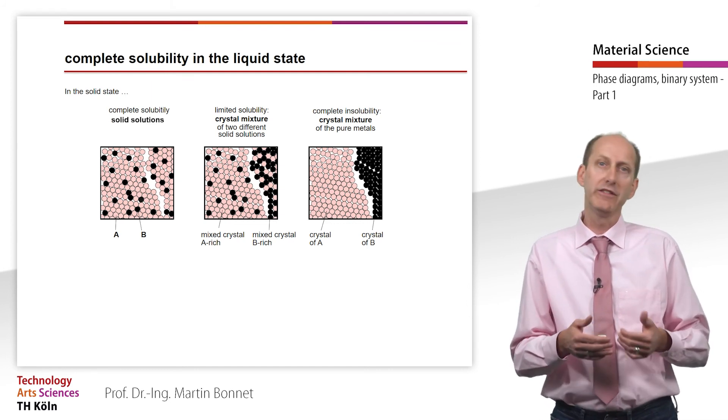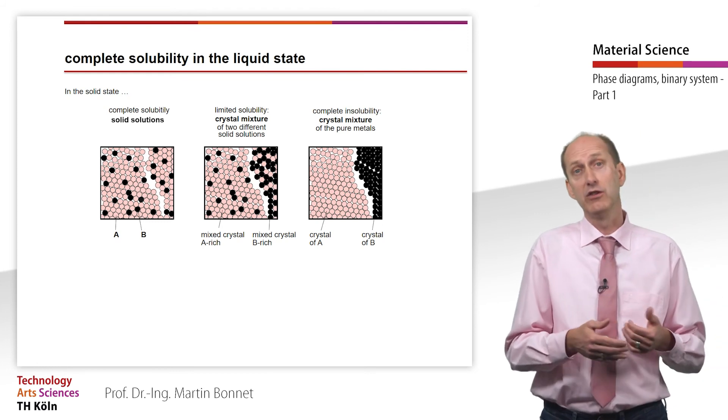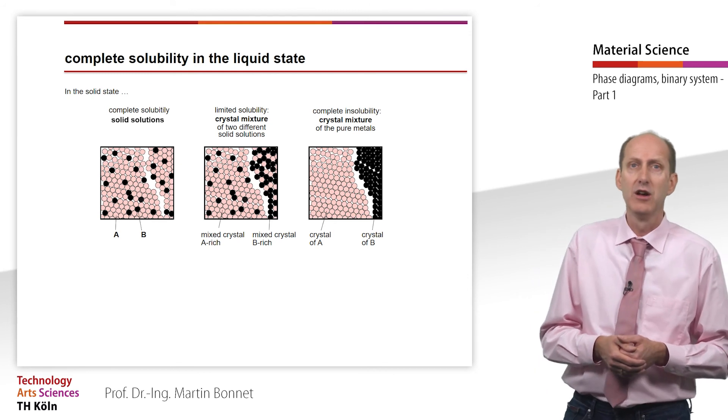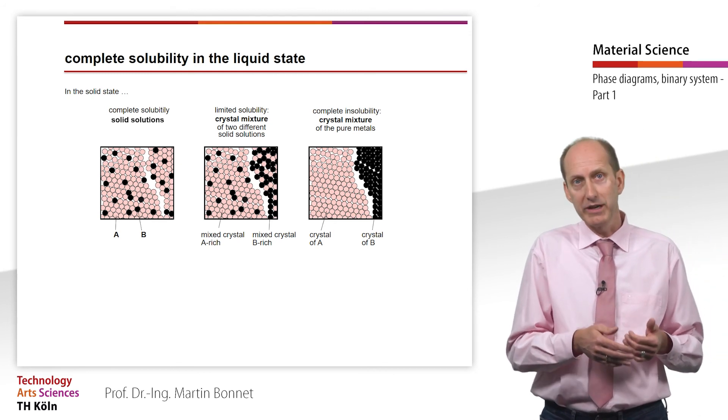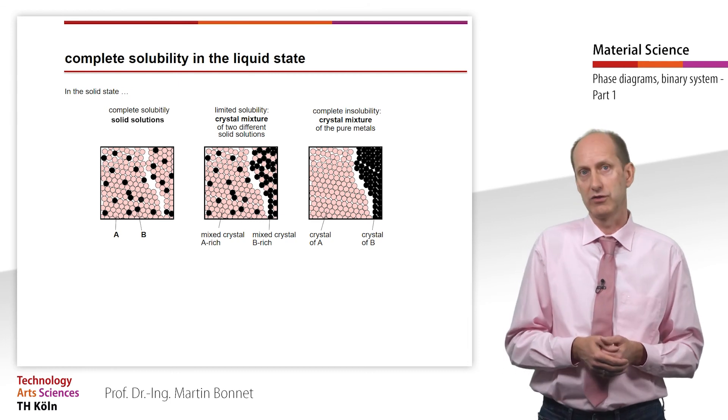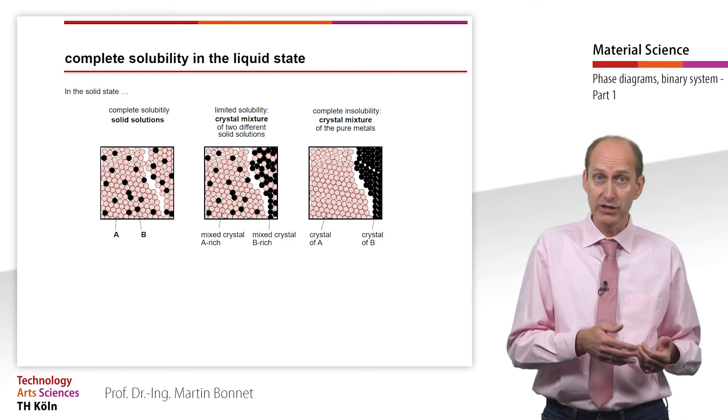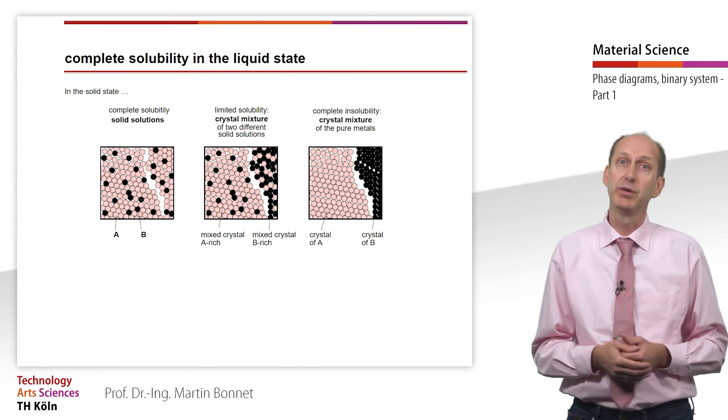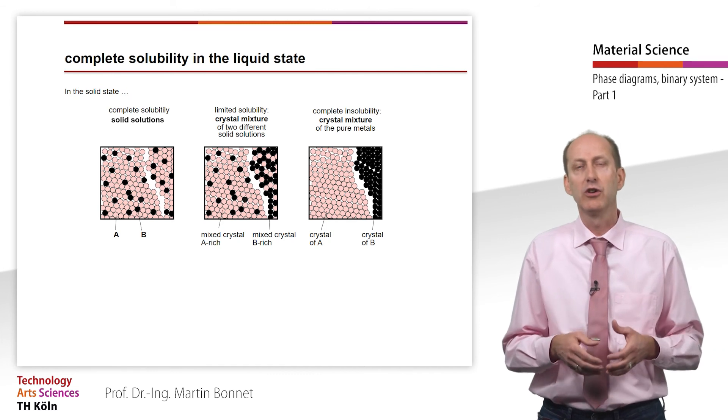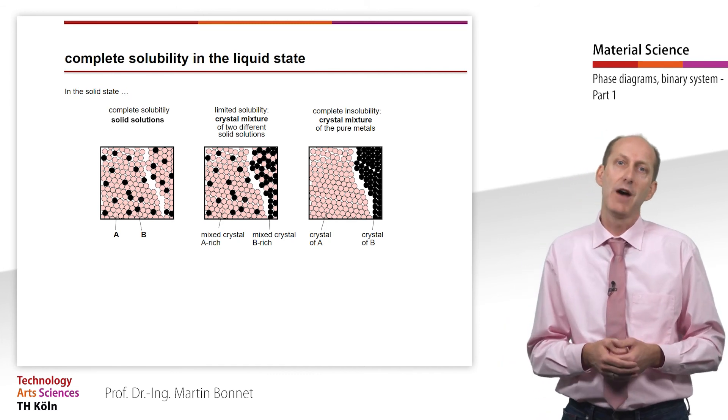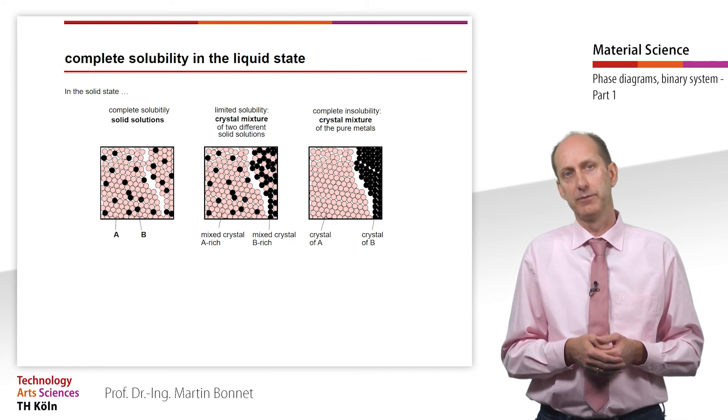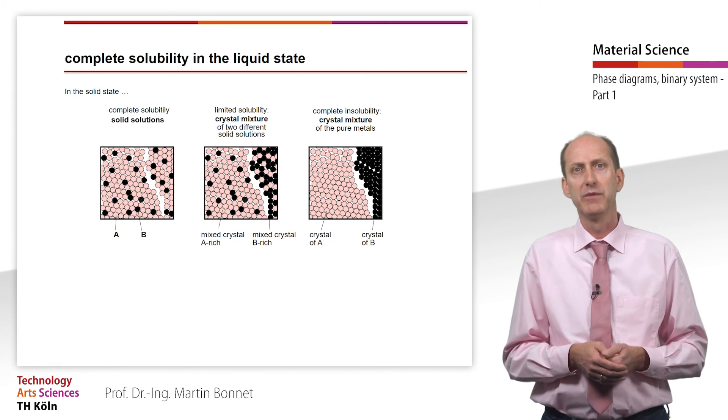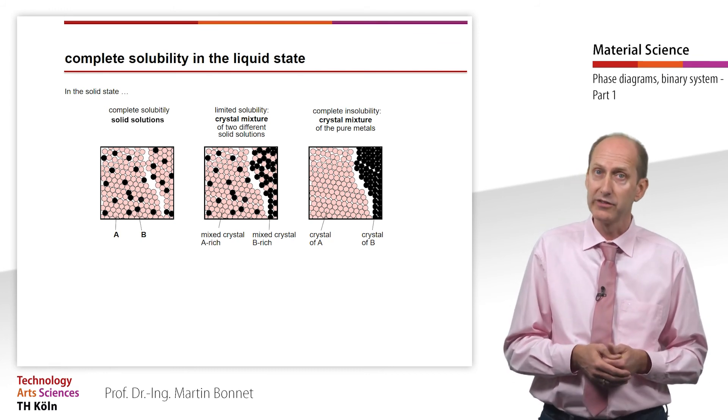Given complete solubility in the solid state, the solid solution is homogeneous. Limited solubility in the solid state results in a crystal mixture consisting of two different solid solutions: the A-rich solid solution and the B-rich solid solution. In the case of complete insolubility, a crystal mixture consisting of crystals of the two pure metals is formed. The different basic elements that are formed from the components are referred to as phases of the alloy.